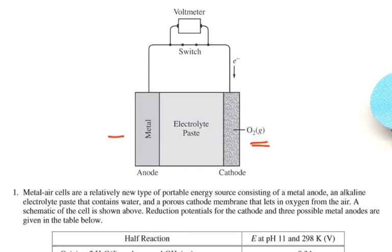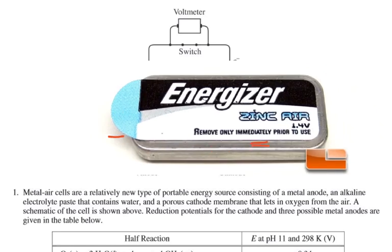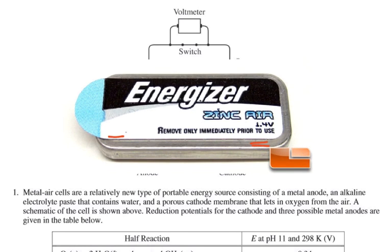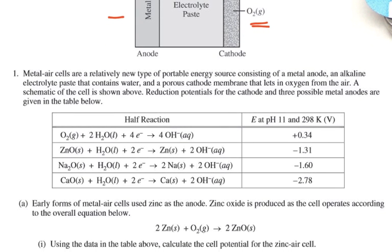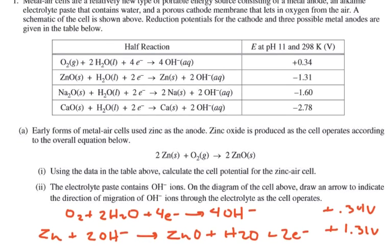We're given some reduction potentials. This kind of zinc cell, zinc air cell, actually does exist. Just finding on the internet, I found a picture that there is kind of a modern zinc air cell that's around, but that's not what we're talking about. First question down here is early forms of the metal air cells use zinc as the anode. Zinc oxide is produced as the cell operates. So what is the cell potential for the zinc air cell?